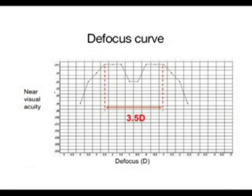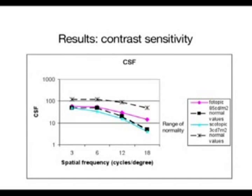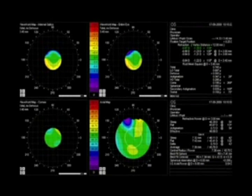The defocus curve shows that for J1, this lens provides a depth of focus of 3.5 diopters, and with intermediate vision qualified for J3. The contrast sensitivity function is at the limits of normality, and this lens corresponds to the contrast sensitivity of a middle-aged person. The optical analysis shows in this image an excellent MTF function, with an outstanding bi-dimensional PSF. In spite of the sector, these lenses do not induce coma aberration, as shown in the internal aberrometry.